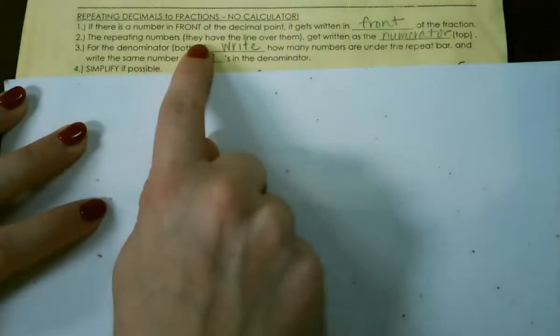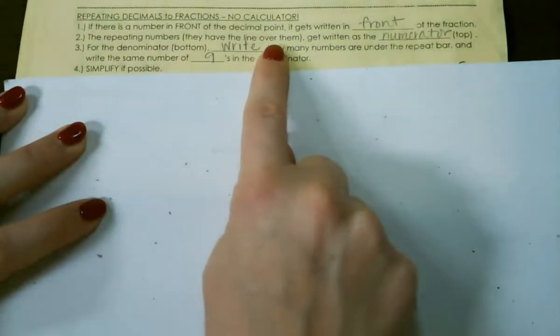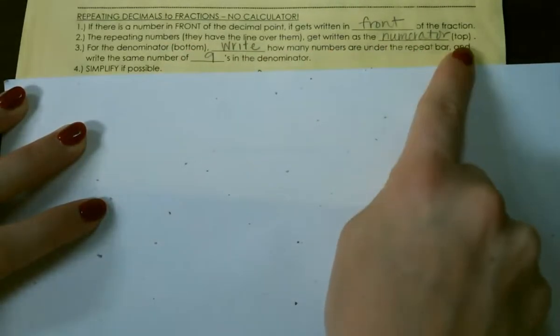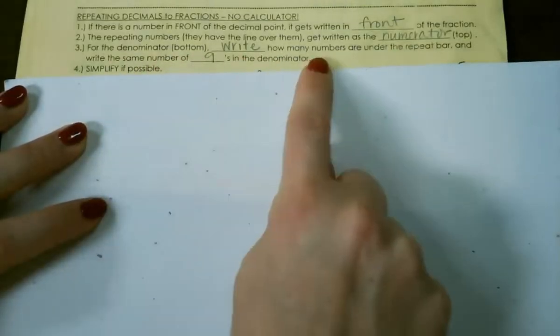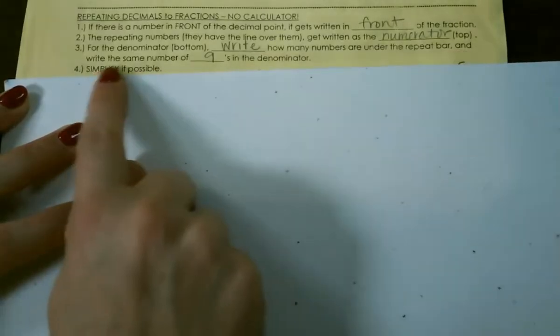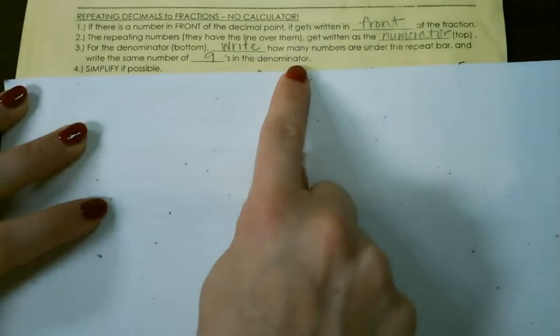The repeating numbers, they're the ones that have the line over them, get written as the numerator or the top number. And for the denominator or the bottom number, you write how many numbers are in the repeat bar, and write the same number of 9's in the denominator.